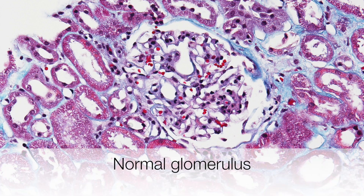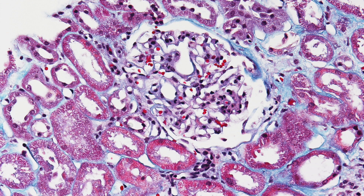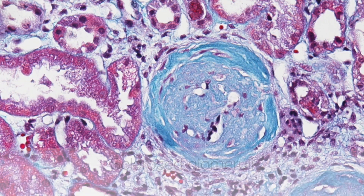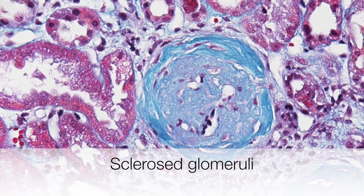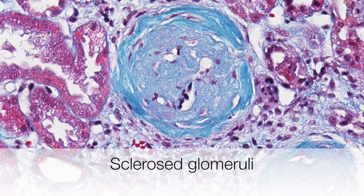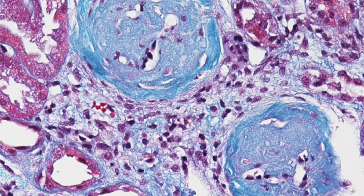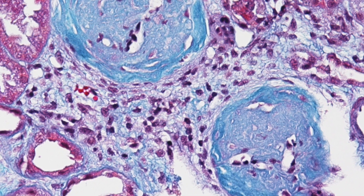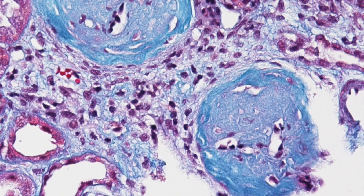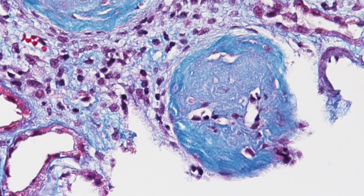This is another example of a normal glomerulus with nice tufts of capillaries and no evidence of excess fibrosis. Here are two glomeruli almost completely obliterated by deposition of collagen staining blue. This is another example of how sclerosis can gradually destroy the function of an organ by obliterating glomeruli one by one.